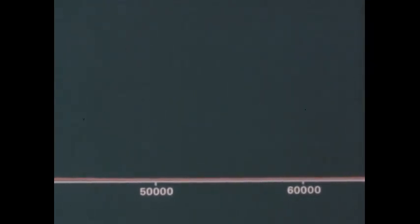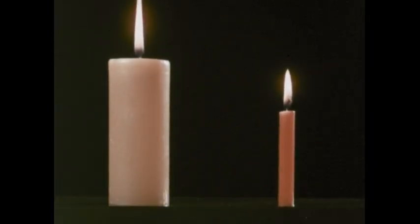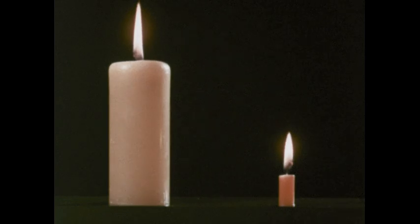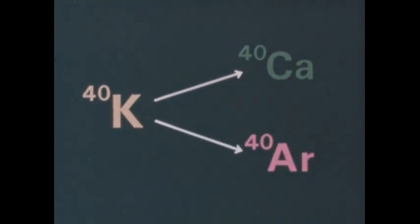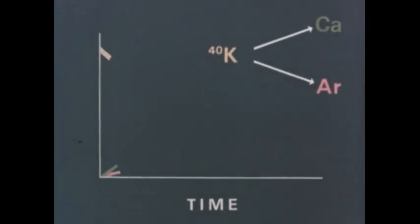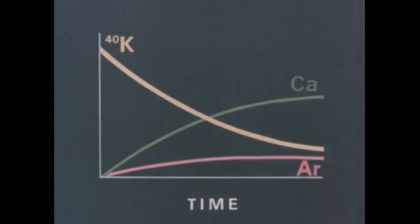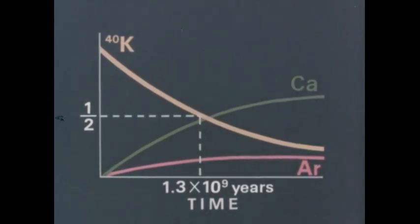To find the age of even older substances, both organic and inorganic, we can use another kind of atomic clock. But one that uses up its radioactive material over a longer period of time. This slower running clock is provided by the radioactive element potassium-40. Potassium-40 slowly decays to calcium-40 and argon-40. The rate at which potassium-40 decreases and calcium and argon increase in a substance is known. Potassium-40's half-life is 1,300,000,000 years, far longer than carbon-14's.